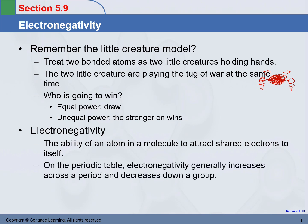This is the trend of electronegativity in the periodic table. Going from left to right, electronegativity increases. From top to bottom, electronegativity decreases. We are excluding column number eight — the noble gases — which are not interested in chemical bonding; they stay by themselves.